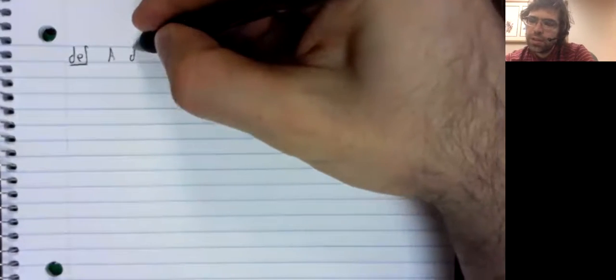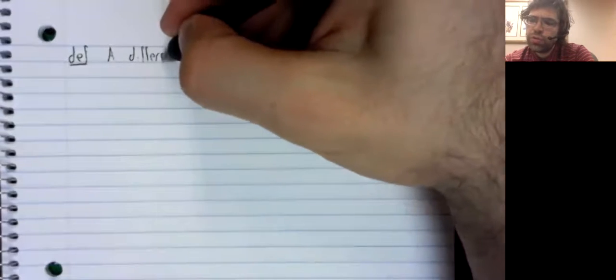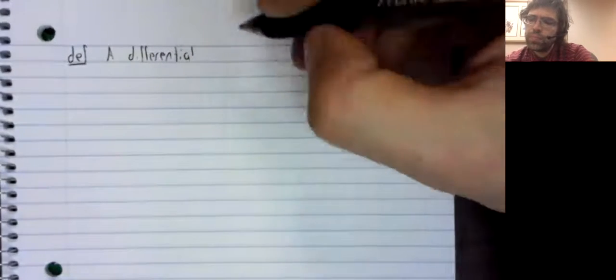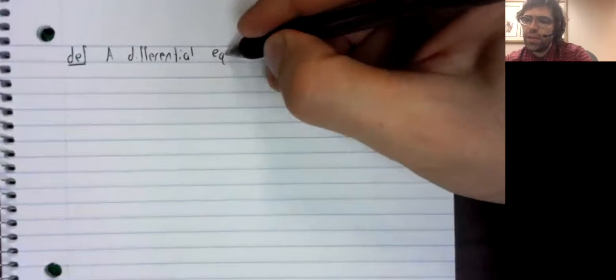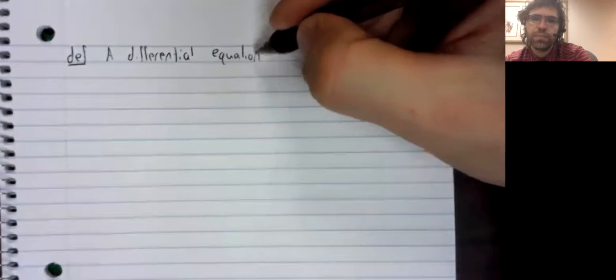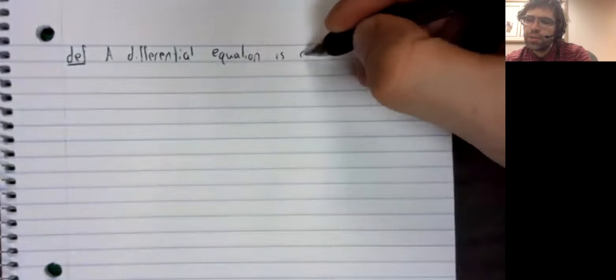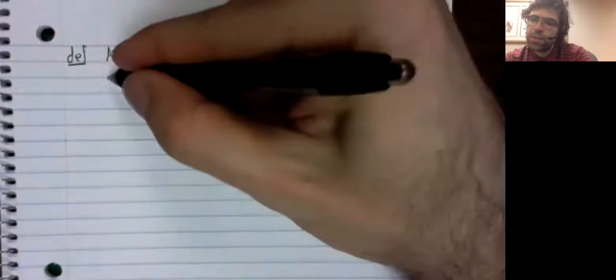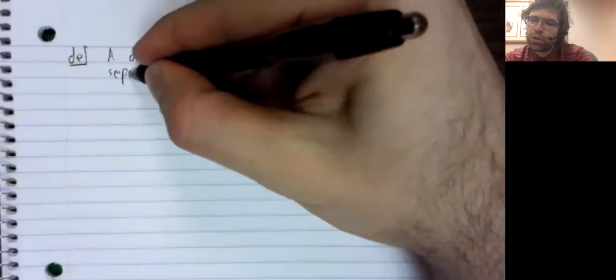Let's summarize separation of variables and then formally justify it as a method. So definition. A differential equation is called separable